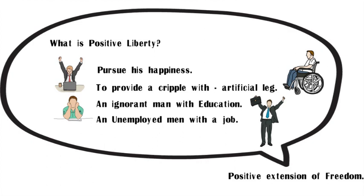To conclude: positive liberty is not an absence of restraint. It is a provision of those socio-economic and political conditions without which liberty cannot be realized. Positive liberty implies the removal of only such constraints and provision of only such opportunities which can be accomplished through the alteration of socio-economic conditions. I hope you have understood both the concept of negative liberty and positive liberty. Feel free to comment below, and I'll see you in the next tutorial.